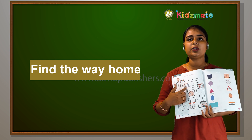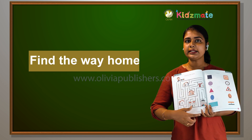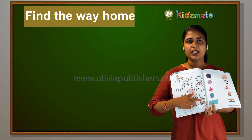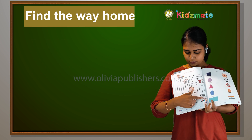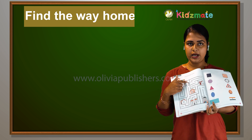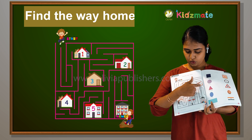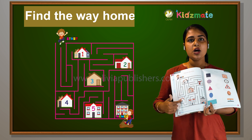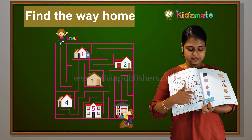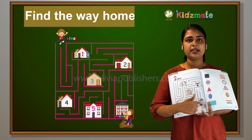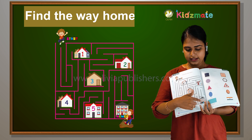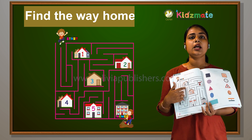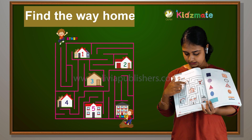Now, what do we do? The way is here. Home number one, home number two, home number three, home number four, home number five — touch it and you can count it. All right.